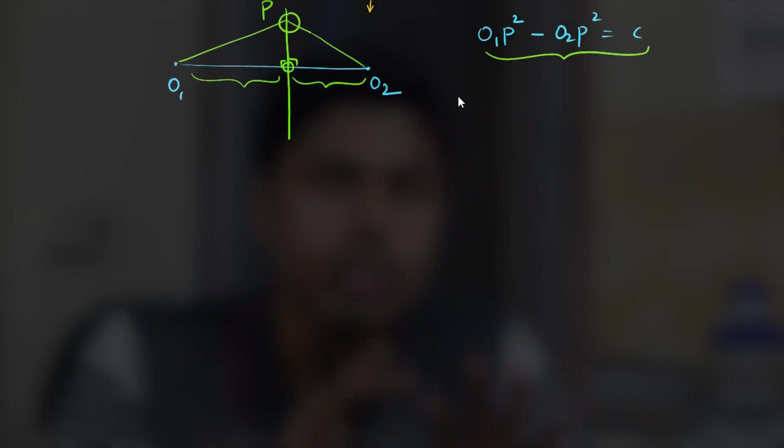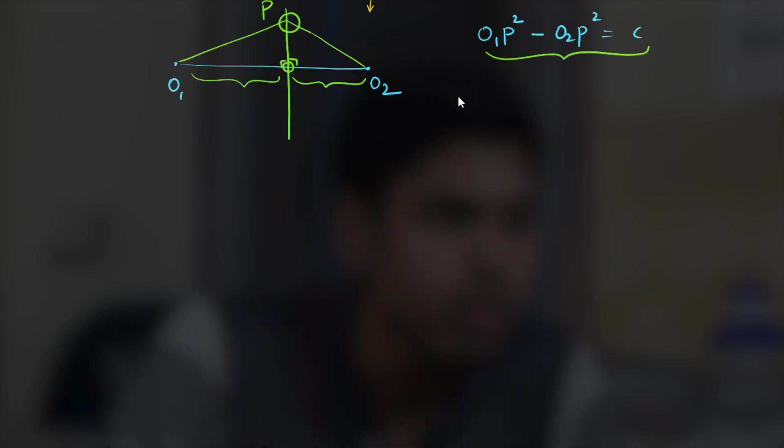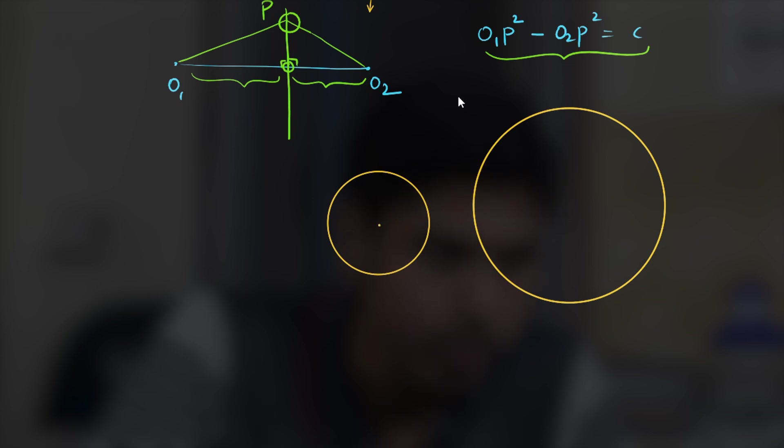For two circles that intersect, radical axis is the line joining points of intersection and for two circles that do not intersect it is some line perpendicular to the line joining centers as shown. These are the basics required to understand the properties of Humpty and Dumpty points. We will now get into the Humpty definition and its properties in the upcoming video. Thank you for watching, bye.